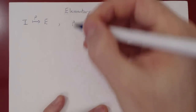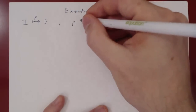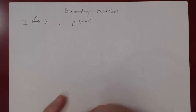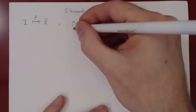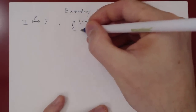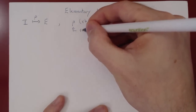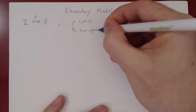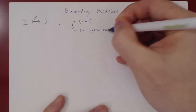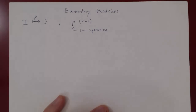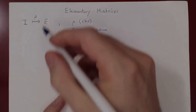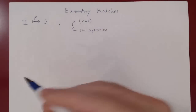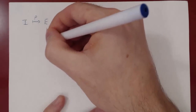Rho — again the Greek letter R, written as RHO — stands for a single row operation. And if E can be obtained from I by applying a single row operation, E is called elementary.